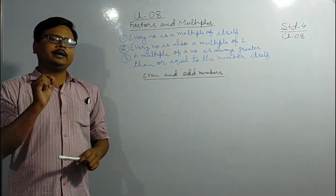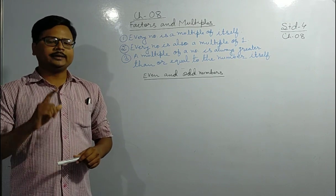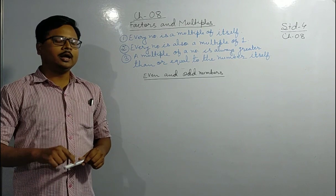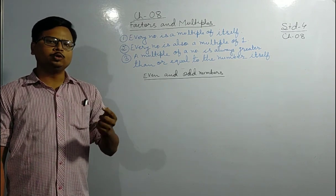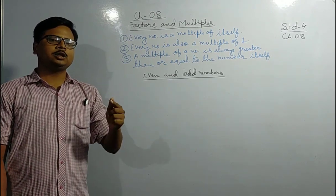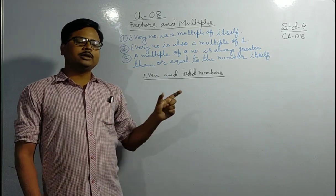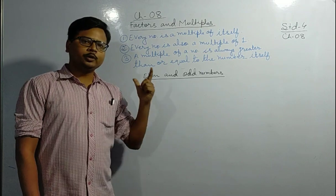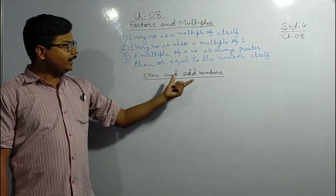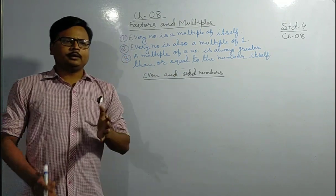For example, when you multiply four by one you get four — the answer equals the number itself. When you multiply four by two or three, you get eight or twelve respectively, which are greater than four. This satisfies rule number three. Now let us come to even and odd numbers.